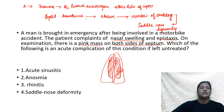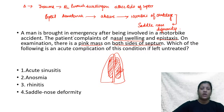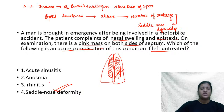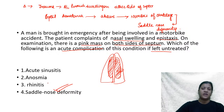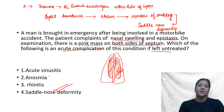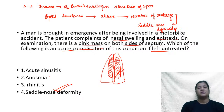The question asks for the complication if left untreated — the answer is saddle nose deformity. Sinusitis, anosmia, and rhinitis could occur but mostly as delayed or indirect complications. The direct implication of an untreated septal hematoma is septal abscess, which leads to saddle nose deformity.